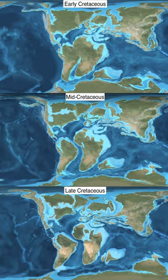Species which depended on photosynthesis declined or became extinct as atmospheric particles blocked solar energy. Photosynthesizing organisms, such as phytoplankton and land plants, formed the primary part of the food chain in the late Cretaceous, and all else that depended on them suffered as well. Herbivorous animals, which depended on plants and plankton as their food, died out as their food sources became scarce. Consequently, the top predators such as Tyrannosaurus rex also perished. Yet only three major groups of tetrapods disappeared completely: the non-avian dinosaurs, the plesiosaurs and the pterosaurs. The ichthyosaurs and last remaining temnospondyls and non-mammalian cynodonts were already extinct millions of years before the event occurred. Coccolithophorids and molluscs, including ammonites, rudists, freshwater snails and mussels, as well as organisms whose food chain included these shell builders, became extinct or suffered heavy losses. It is thought that ammonites were the principal food of mosasaurs, a group of giant marine reptiles that became extinct at the boundary.